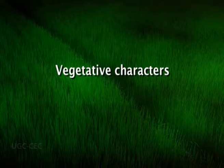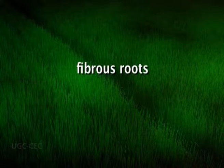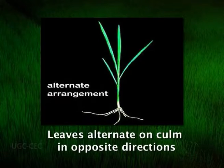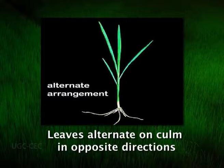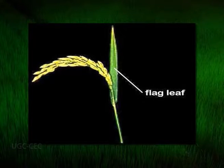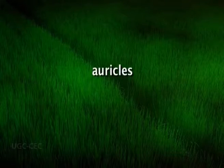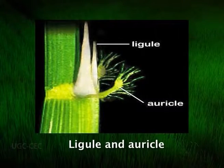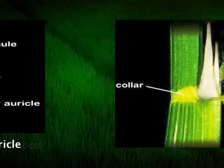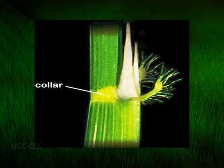Vegetative characters: the roots are fibrous, having rootlets and root hairs. The leaves arise in a two-ranked arrangement on the culm, and one leaf is present at each node. The uppermost leaf below the panicle is called the flag leaf. There are two ear-like appendages born on either side of the base of the leaf called auricles. A membranous structure known as ligule is present at the junction of the blade and sheath, and this junction is known as the collar.